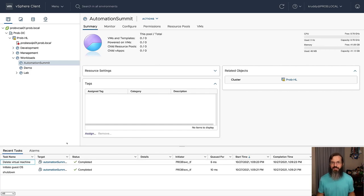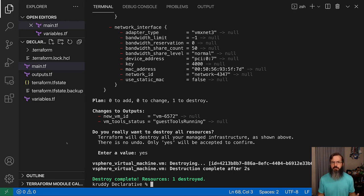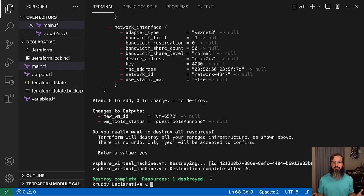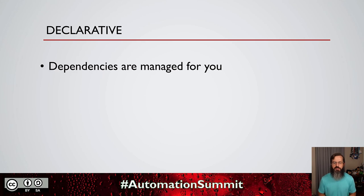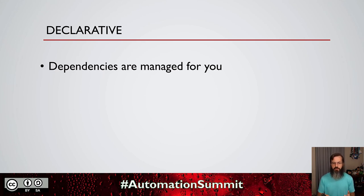If we jump into our vSphere environment, we can see that not only did it delete the virtual machine, but it also shut down the guest OS first and then deleted the virtual machine. Just like that, we've cleaned up our environment. We can see that our destroy was complete and we have that one item — that virtual machine — now destroyed. We've achieved the full lifecycle of our virtual machine. When it comes to the declarative side on this, the dependencies are being managed for you. We didn't have to go through and perform multiple steps to shut down the guest OS or wait on it and then delete it — Terraform did all of that for us because it knew about all of those dependencies.